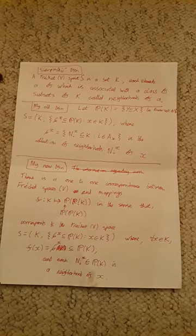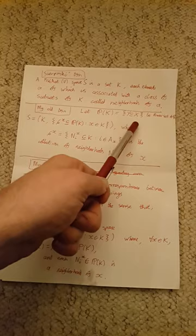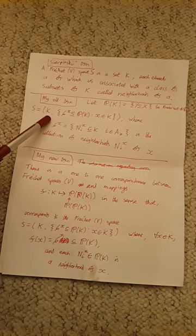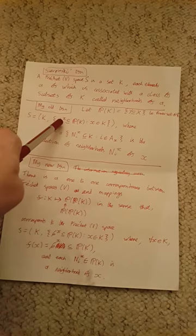The next definition, this is how I would like to define it. We've got a set K. Let P(K) be the power set of K, the collection of all subsets of K. I would define a Fréchet V-space S as a set K of elements and a set of collections of subsets of K.